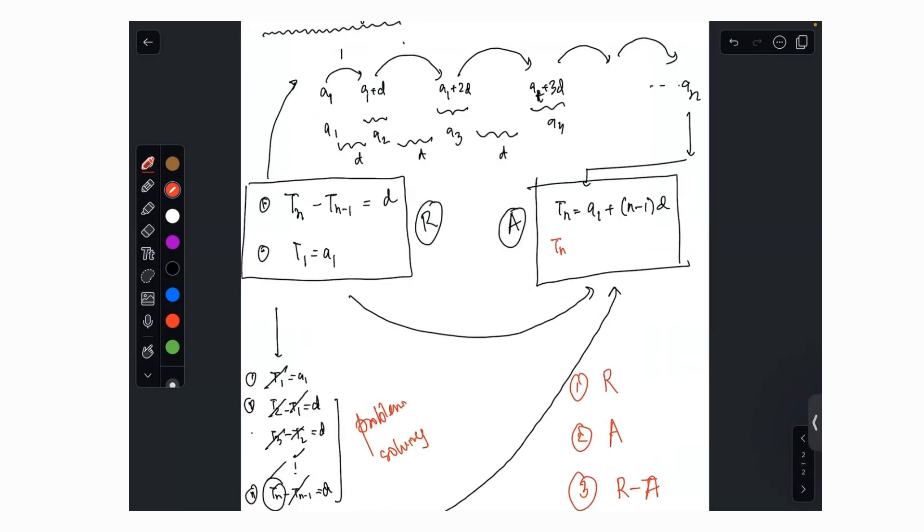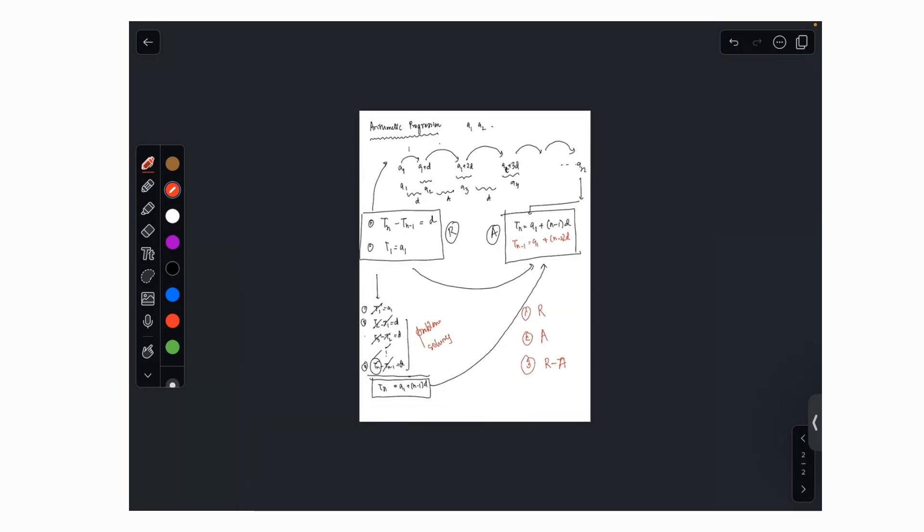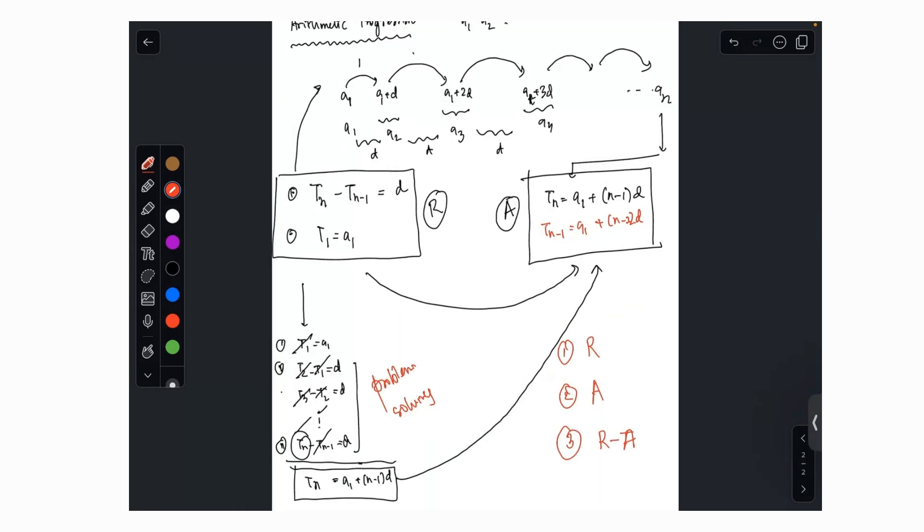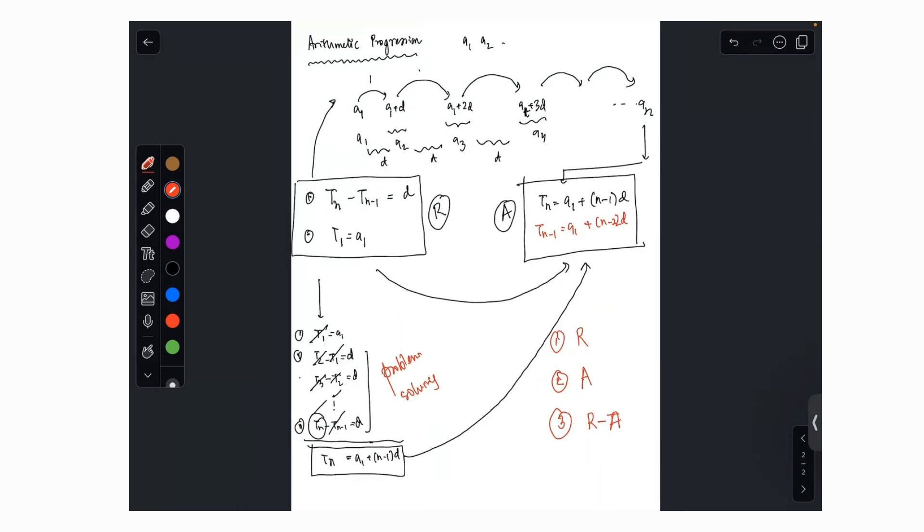If you observe, if you write like TN minus one equals A1 plus N minus 2D, you will see that TN minus TN minus one is also D. So that's how you also get it. So we understood the definition and three aspects of arithmetic progression.